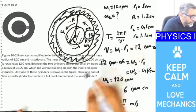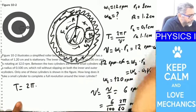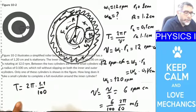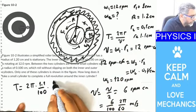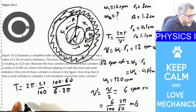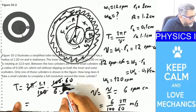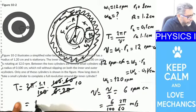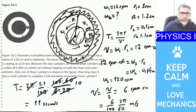Putting everything together, the period is 2π times R — where R is 1.1 centimeters, so 1.1 divided by 100 to convert to meters — divided by V prime. Taking the inverse: 100 multiplied by 60, divided by 6 times 2π. The two π's cancel, the hundreds cancel, and 60 divided by 6 is 10. So the period is going to be 11 seconds.